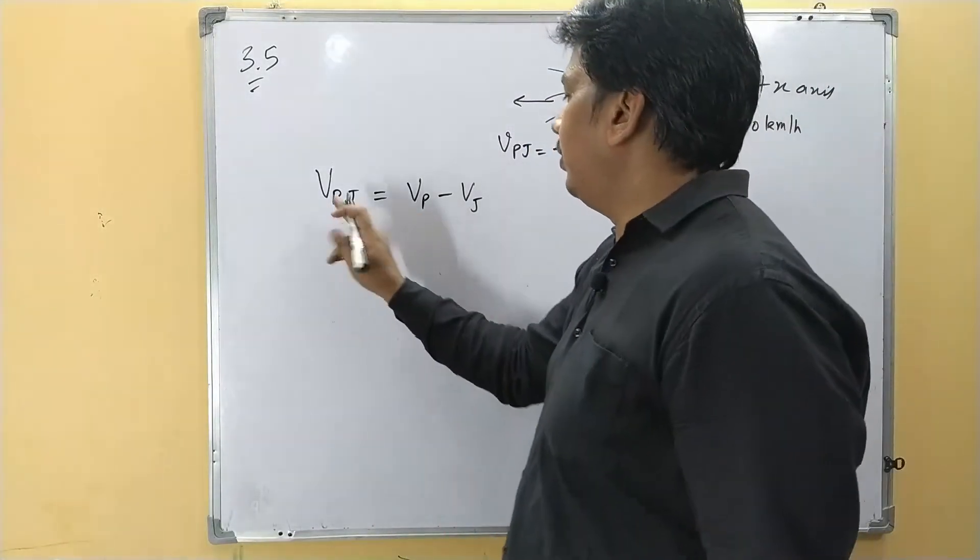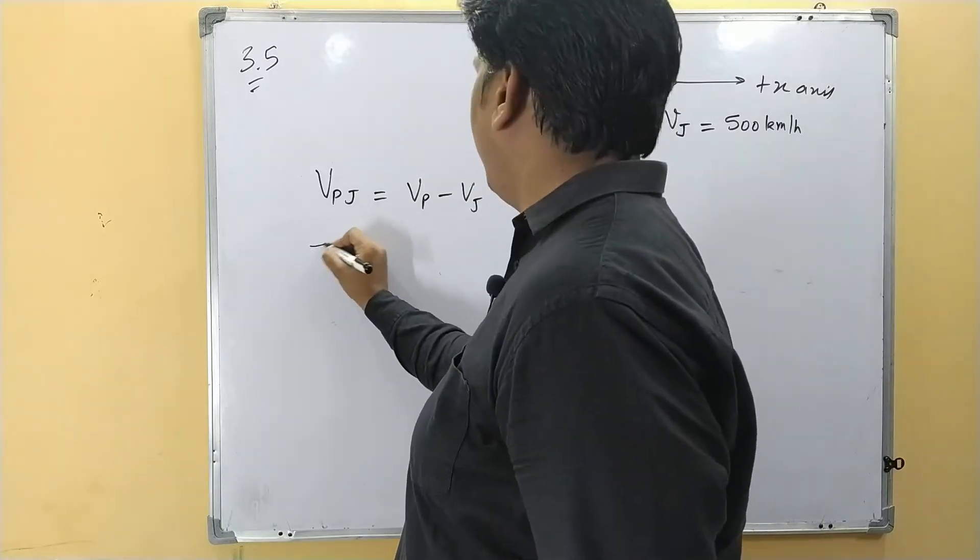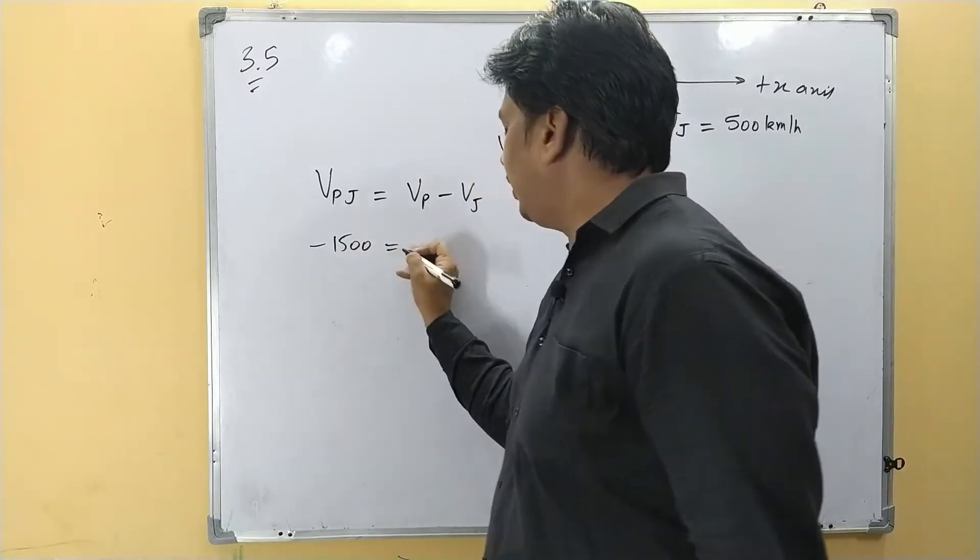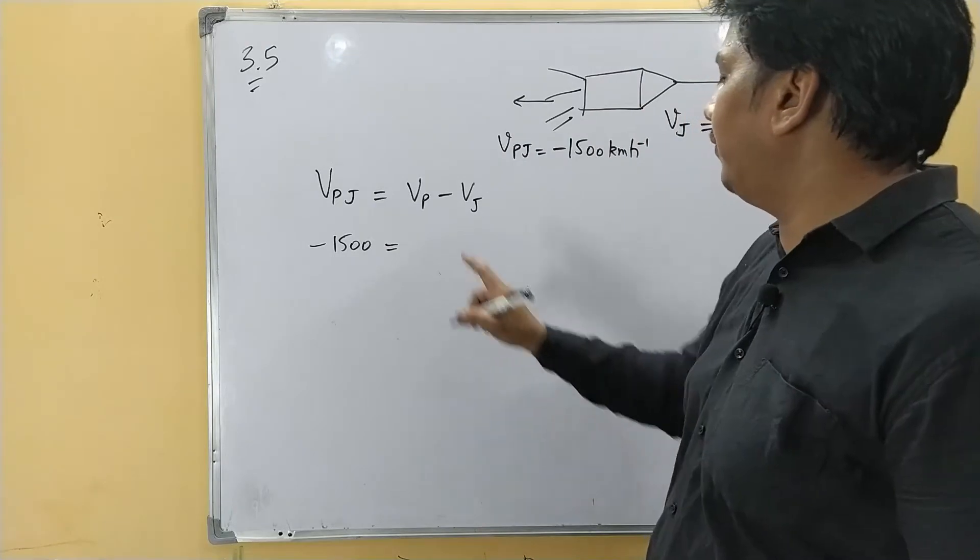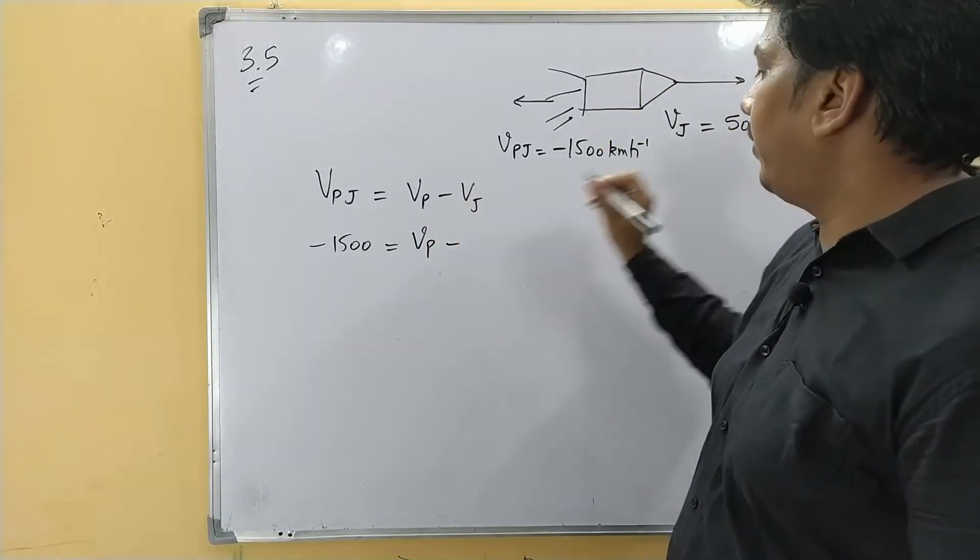Now what is vpj? Velocity of the product with respect to jet plane is minus 1500 equal to velocity of product we have to calculate, and velocity of jet is 500.